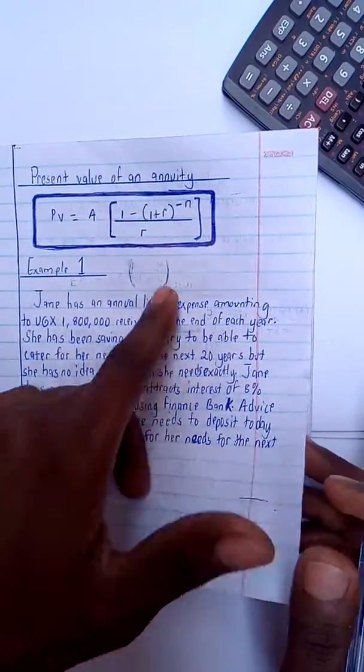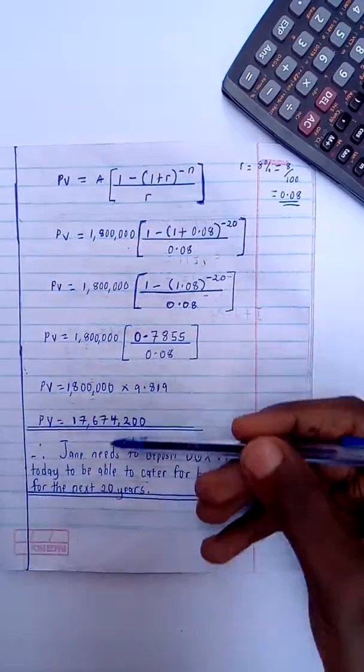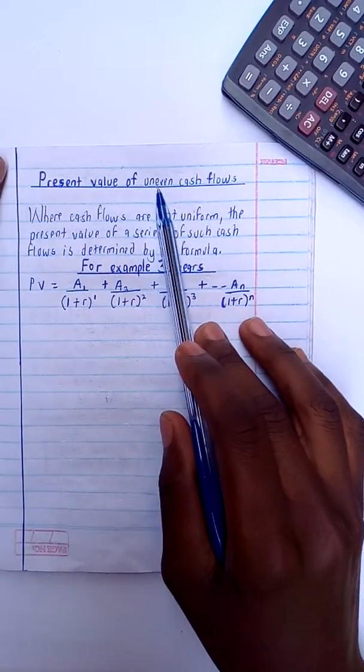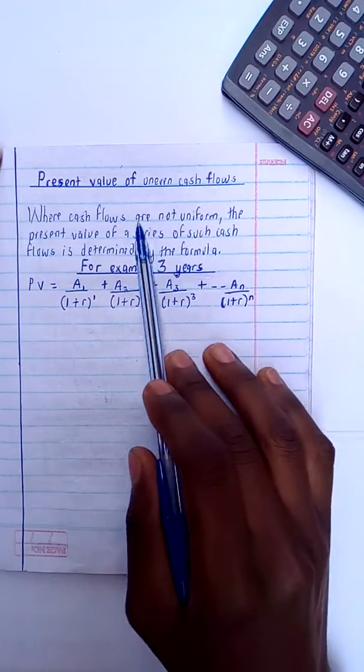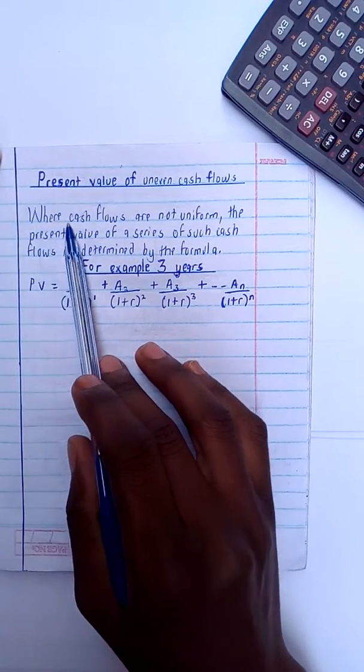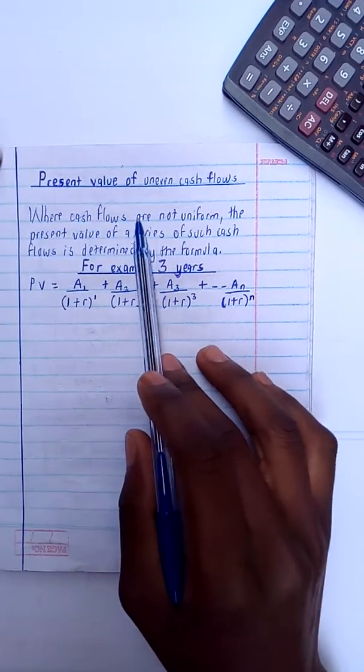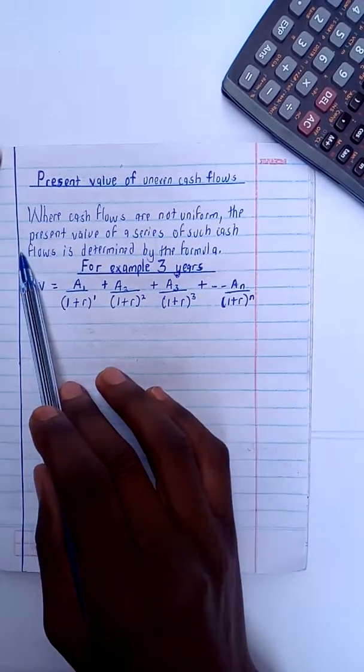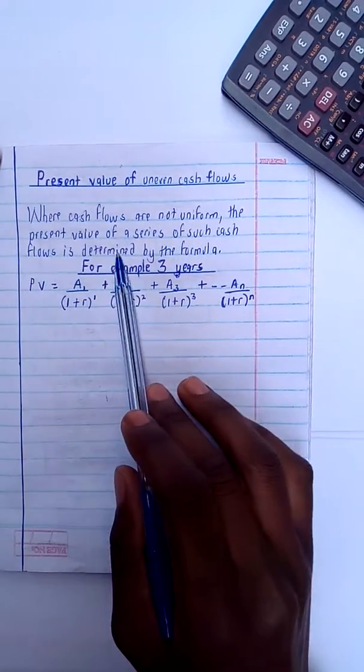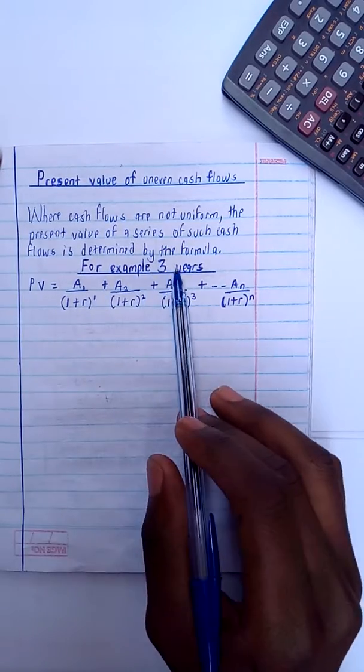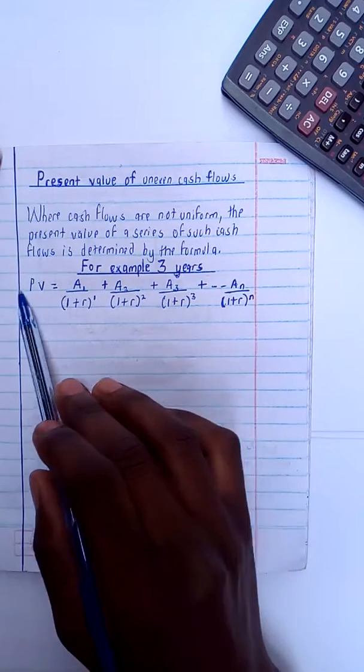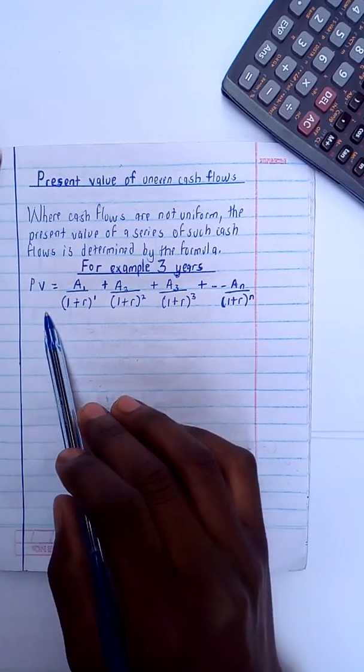So with that, I'll be done with the present value of an annuity. Moving on, I'll be moving on to the present value of uneven cash flows. Now with this, where cash flows are not uniform, the present value of a series of such cash flows is determined by the formula. For example, if I'm given three years, I'm going to say the present value...